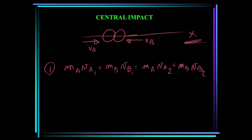We still have two unknowns — typically we know the initial velocities, but we don't know the velocities of each ball after impact. So we need another equation, and for that we'll turn to the coefficient of restitution.